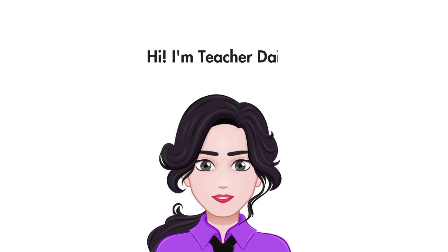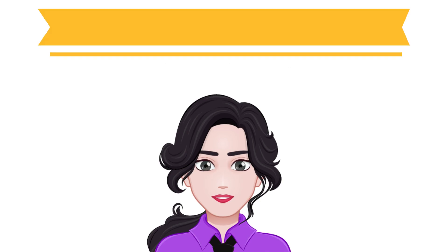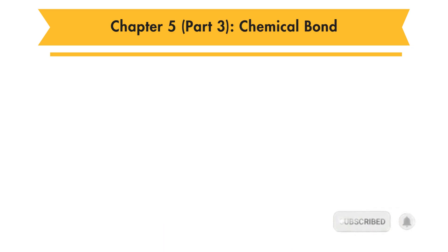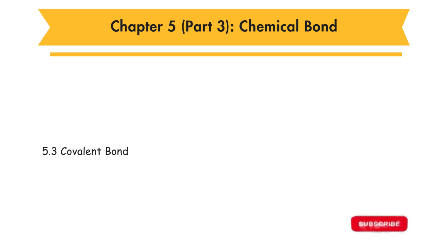Hi, I am Teacher Daisy. Now, let's learn Form 4 Chemistry Chapter 5 Chemical Bond, Part 3. In this part, you will learn 5.3 Covalent Bond.